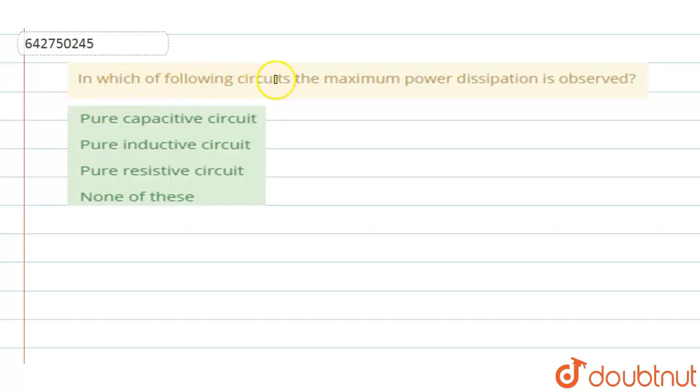In which of the following circuits is the maximum power dissipation observed? They have given you a list of four things: pure capacitive circuit, pure inductive circuit, pure resistive circuit, and none of these. They are asking among these in which circuit you have maximum power dissipation.